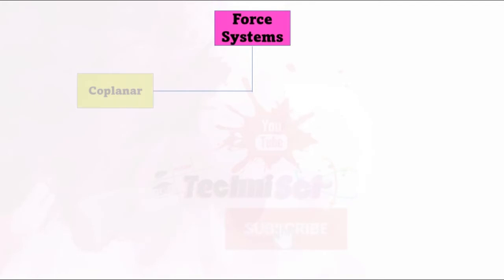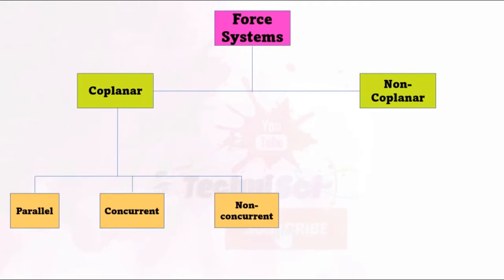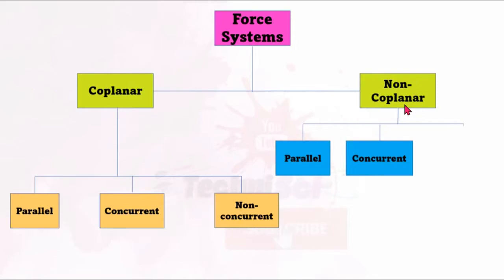When we look at force systems there are two main types. First we have coplanar forces, and under coplanar we have parallel, concurrent, and non-concurrent. Likewise, under non-coplanar we also have parallel, concurrent, and non-concurrent. Those are the two main branches of force systems.